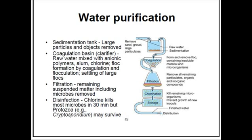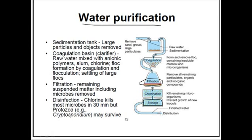After sewage treatment, we go through removal of gravels and particles, then coagulation, then a filtration process — filtration is a major process of normal water treatment. The difference between water treatment and sewage treatment is that sewage treatment is used for industrial water treatment; its output goes to normal day-to-day life purposes, while drinking water goes through additional purification steps like filtration, chlorination, storage, and then distribution.